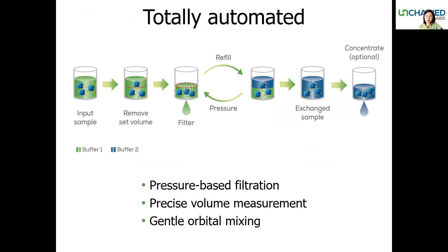BigTuna's buffer exchange starts when you place the sample-filled filtration plate inside the positive pressure chamber. An acoustic volume sensor will start to measure each well to get the initial volume before positive pressure is applied to remove the filtrate. After pressurization, the volume sensor measures the amount left in the well and replaces the removed volume with new buffer. The cycle of pressurize, measure volume removed, and replenish will repeat until the old buffer is completely replaced. Throughout, a gentle orbital mixing action makes the exchange faster by stirring up particles during filtration to prevent concentration gradient buildup and minimize the risk of clogged wells.